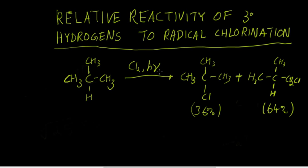Both of these products proceed by the radical halogenation mechanism, which after initiation and furnishing of the chlorine radical entails formation of a 2-methylpropyl radical. The radical will either be a tertiary radical with the unpaired electron on this carbon, or it'll be a primary radical with the unpaired electron on one of these three carbons, which are all equivalent carbons.